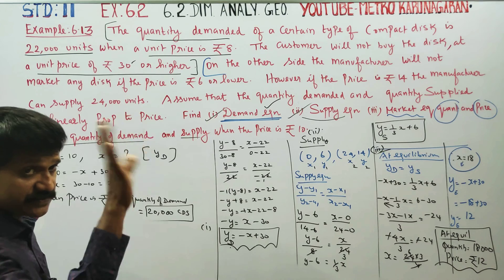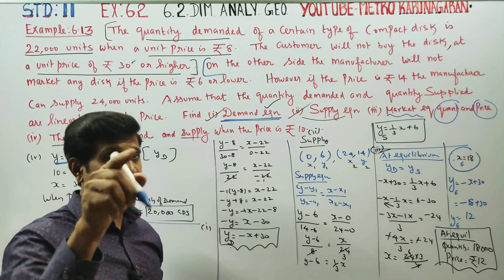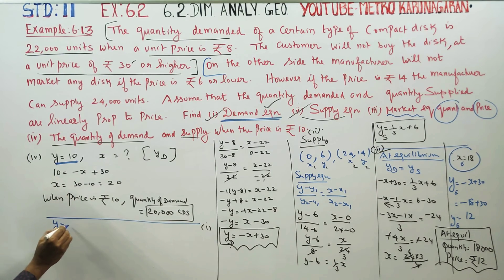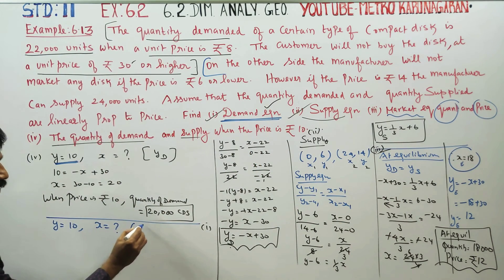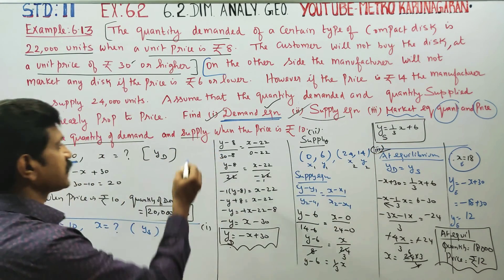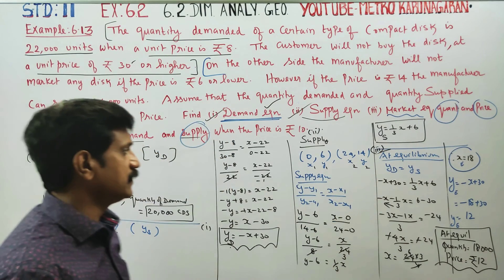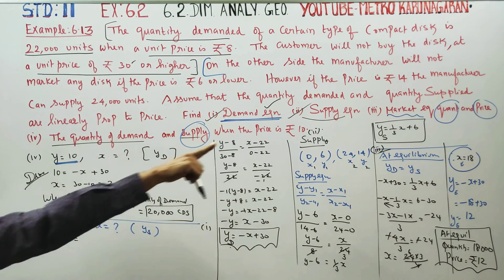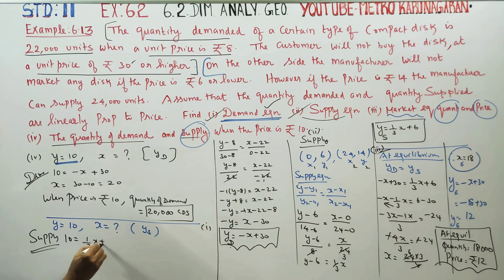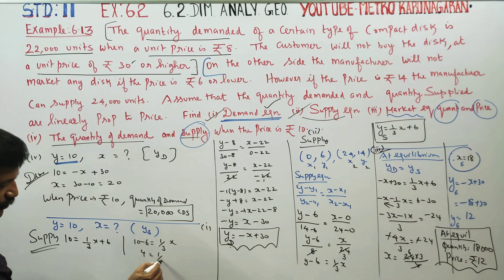Now substitute y = 10 into the supply equation to find the supply quantity. Using ys = (1/3)x + 6: 10 = (1/3)x + 6, so 10 - 6 = (1/3)x, giving 4 = (1/3)x. Cross-multiplying: x = 12.